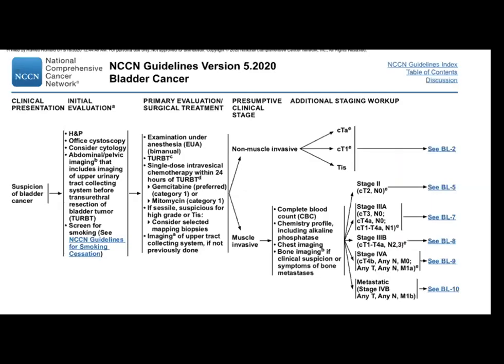Based on NCCN guidelines — just updated this year — if there's a high suspicion for bladder cancer, you do a history and PE, office cystoscopy, cytology, and other imaging techniques. Then you do TURBT. This lecture is divided into non-muscle invasive and the management of muscle and non-muscle invasive bladder cancer.